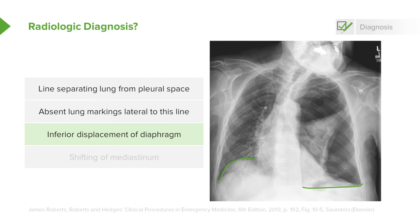On x-ray you also see inferior displacement of the diaphragm on the affected side — the high-pressure air collection displaces it downward. For the same reason, the mediastinum, normally a left-sided structure, is displaced into the middle or right-hand side of the chest.